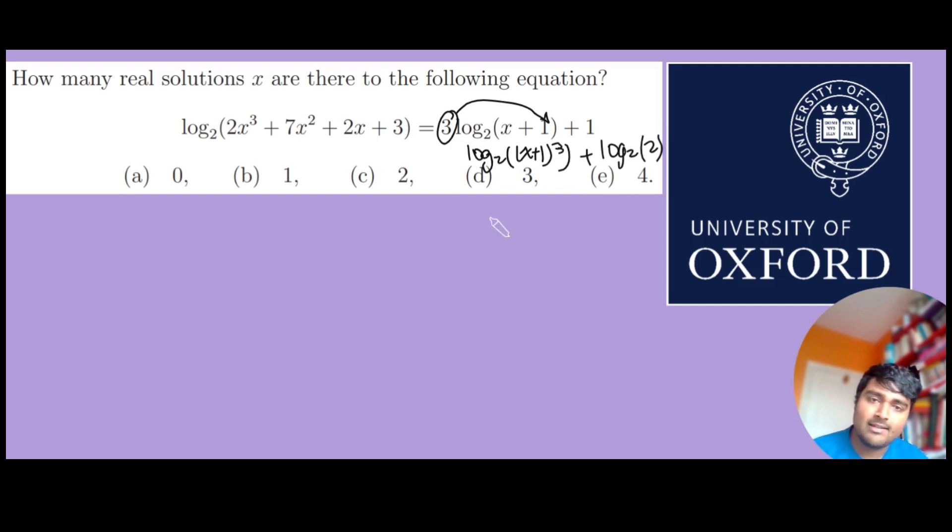We can group these two terms together, so our right-hand side becomes log base 2 of 2(x + 1)³. Now I can cancel the log base 2s on both sides, so I get 2x³ + 7x² + 2x + 3 = 2(x + 1)³.